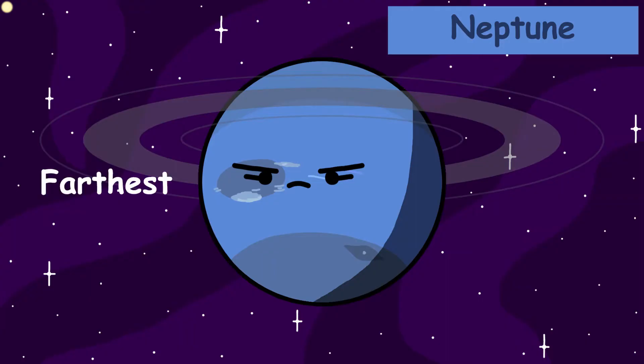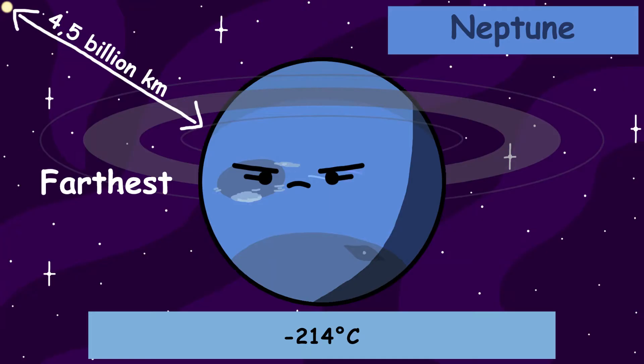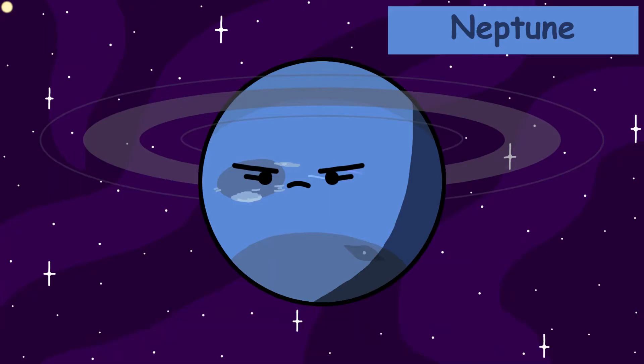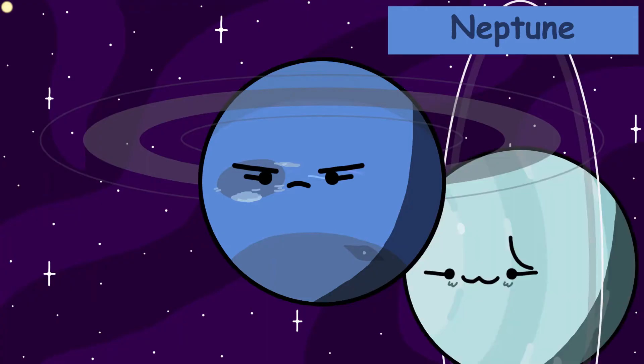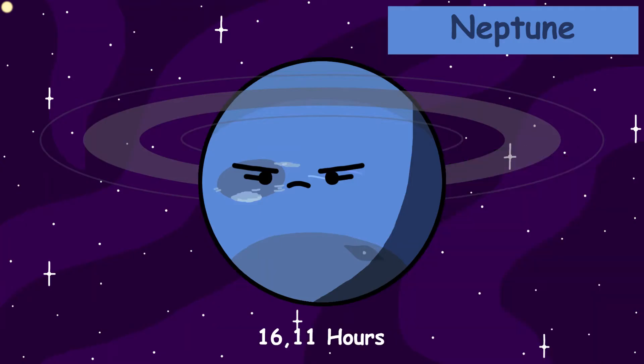It's the farthest planet from the sun. Being so far away from the sun, it has an average surface temperature of negative 214 degrees Celsius. Neptune is also the same size as sister planet Uranus, with a radius of 24,622 kilometers. Neptune has a day as long as 16.11 hours, but its years last 165 Earth years long.